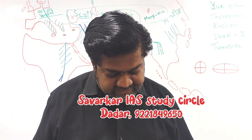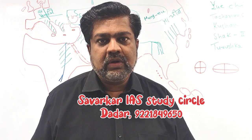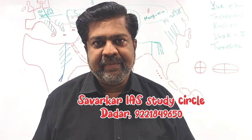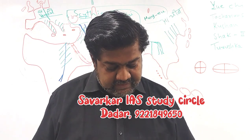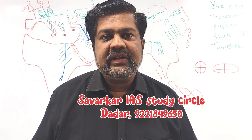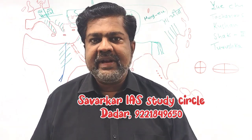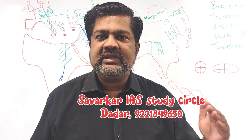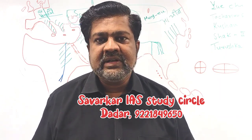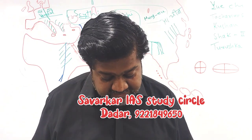Question 10 — Statement 1: Lok Sabha has a maximum of 550 elected members. True — this is the maximum capacity; not every Lok Sabha must have 550, but the maximum is 550. Statement 2: Rajya Sabha is a permanent house of Parliament. True — after every two years, one-third of Rajya Sabha members retire and are replaced, maintaining continuity. Lok Sabha can be dissolved, but Rajya Sabha is the upper house and is never dissolved. Both statements are true — answer is C.